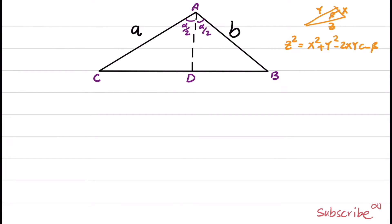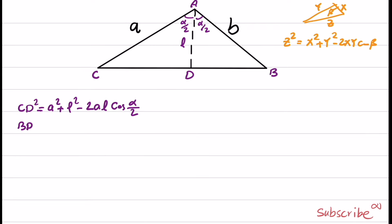This is the formula I'm going to use in two triangles. Applying the law of cosines to the first triangle gives CD squared equals A squared plus L squared minus 2 times A times L times cosine(alpha/2). Applying the same rule to the right triangle gives BD squared equals B squared plus L squared minus 2 times B times L times cosine(alpha/2).